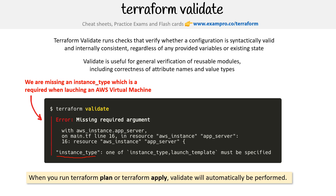One thing to note about Terraform validate is that it does not go to external resources to check that things are valid. So if you have a value and it's expecting a string, that's all it's going to check — it's not going to verify the string is actually a proper type or size. If it's supposed to be something like t2.micro and you write gobbledygook in there, it's not going to know that's not a valid type.